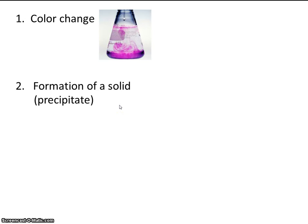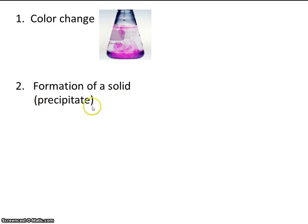If a chemical reaction takes place, you may also see the formation of a solid. Sometimes a solid is called a precipitate. So here, once again, we have a colorless liquid, another colorless liquid, and when we mix them together, it makes this yellow solid powder.